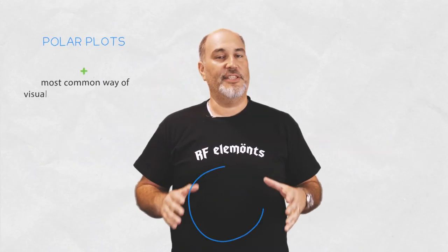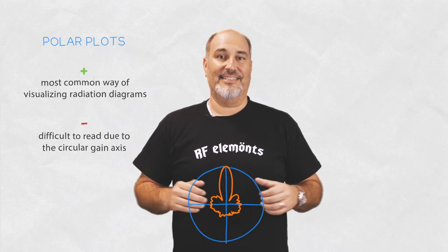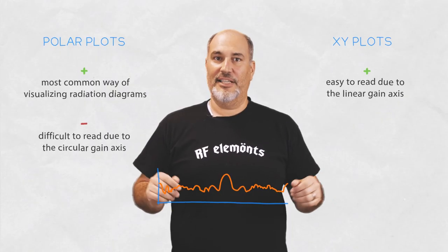Polar plots are the most common way of visualizing radiation diagrams, but it may be difficult to read due to the circular gain axis. Let's straighten the circular gain axis and we get an XY plot. Let's talk about that.